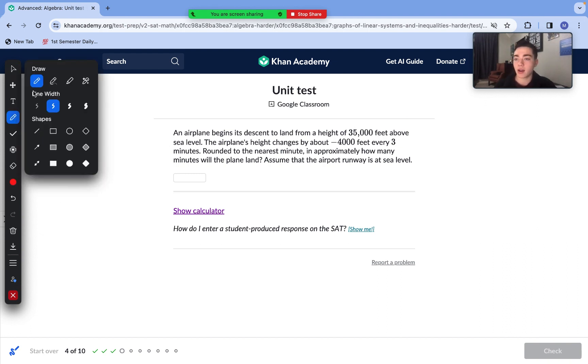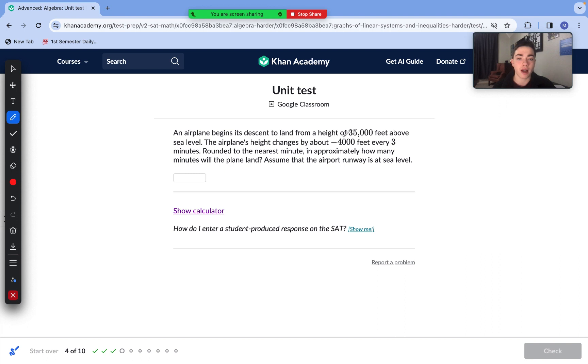Moving on to question number four here. An airplane begins its descent to land from a height of 35,000 feet above sea level. The airplane's height changes about -4,000 feet every three minutes. Rounded to the nearest minute, approximately how many minutes will the plane land? Assume the airport runway is at sea level. We know that our starting amount or our y-intercept is going to be 35,000. We're going to be subtracting a certain amount per minute to find the exact decline. This would be our slope: -4,000 over 3. The slope is obviously next to that x. This needs to equal our y variable or the height when the plane lands. If the airport runway is at sea level, the height is going to be zero. So now we have this full equation and we just need to solve for x.